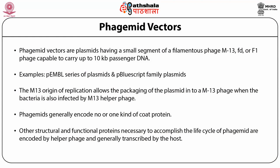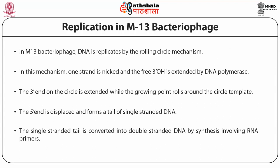Lambda-based phasmid vectors are plasmids having a small segment of filamentous phage M13, FD, or F1 phage, capable of carrying up to 10 kilobase pair passenger DNA. Examples are the PEMBL series plasmids and pBluescript family plasmids. The M13 origin of replication allows packaging of the plasmid into M13 phage when the bacteria is also infected by an M13 helper phage. Phasmids generally encode no or only one kind of protein. DNA replication in M13 bacterial phage takes place by the rolling circle mechanism.